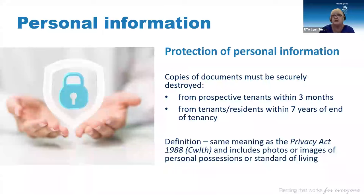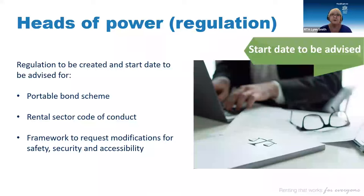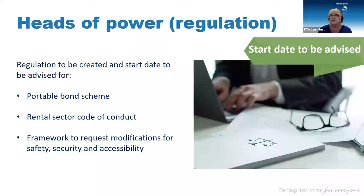On assent in June, the legislation allowed for three heads of power — creation of a regulation relating to the Portable Bond scheme, a rental code of conduct, and a framework for modifications for safety, security and accessibility. These have yet to be created, and once we know more and when there is a start date, we will share that. The regulation needs to be created and started within two years of assent — by the 6th of June 2026 — otherwise they lapse.